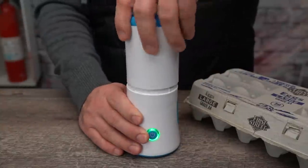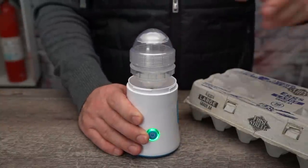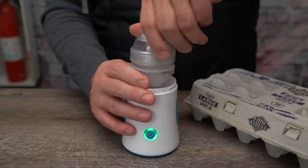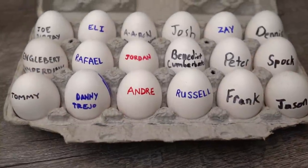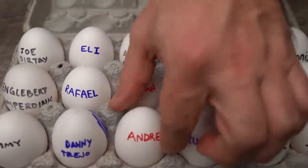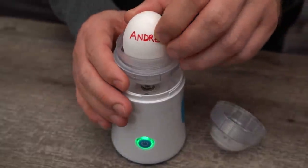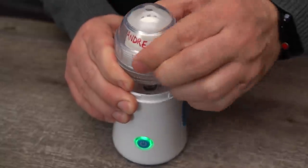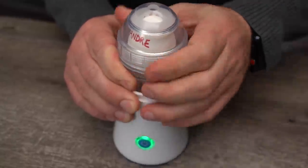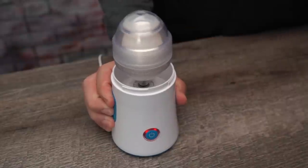After you plug it in, unscrew the top off to reveal the egg Gravitron beneath. After that, go ahead and remove that top layer of the egg holder. Now just head over to your carton of lovingly named eggs and select one. After placing it into the seat and screwing the lid back on, it's time to give Andre here 3,000 revolutions per minute. You start the process by double tapping the power button.